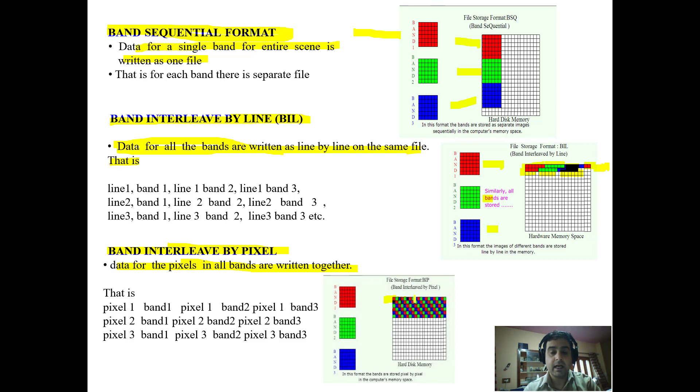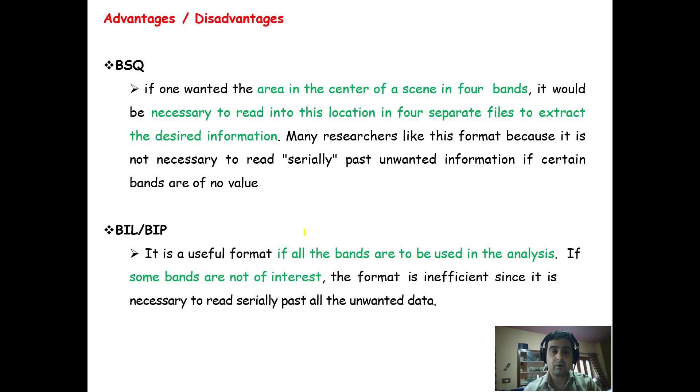Then pixel 4 again carries band 1 data, then band 2 data, band 3 data. Had there been more than three bands, the information would have been pixel 1 band 1, pixel 2 band 2, pixel 3 band 3, pixel 4 from band 4, pixel 5 from band 5, likewise. So this is called band interleave by pixel. This is how it is stored in the same file, whereas here each band has a separate file.